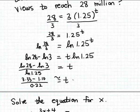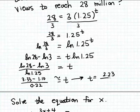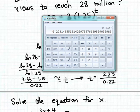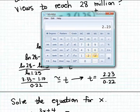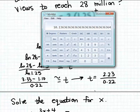Let's continue simplifying this estimated value for T. We have 3.33 minus 1.10, which is about 2.23, and we're dividing by 0.22. Using the calculator, 2.23 divided by 0.22 is about 10.1.